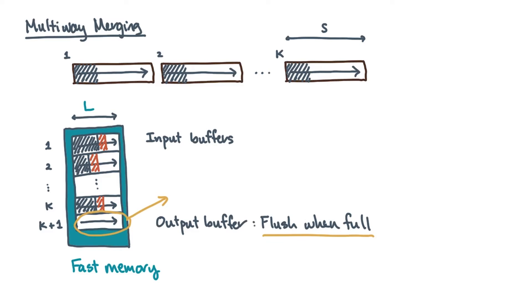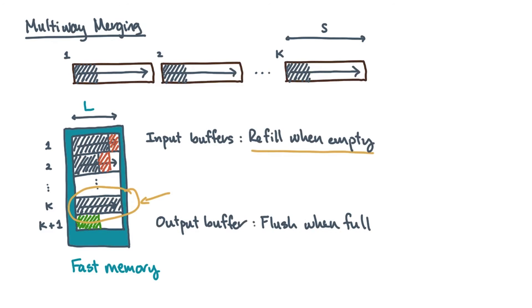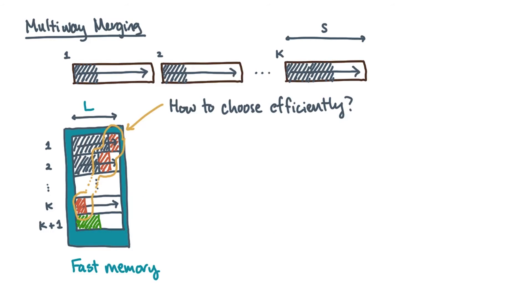Similarly, you will at some point exhaust one of the input buffers. Again, if there are any unread blocks of the input that remain, you just refill it. Now let's return to the question, how should you pick the next smallest item from the input frontier? You have several natural options.